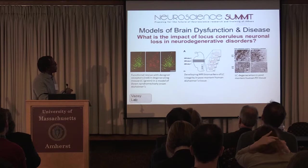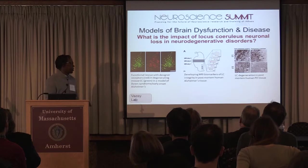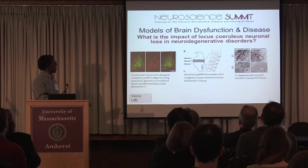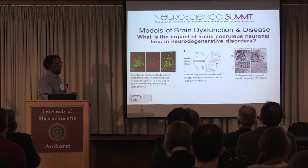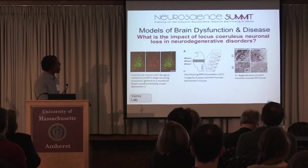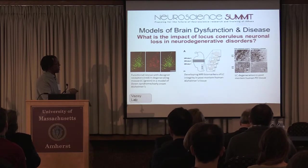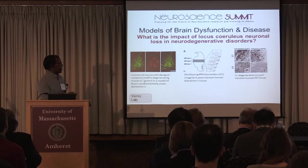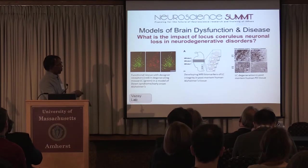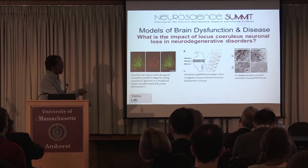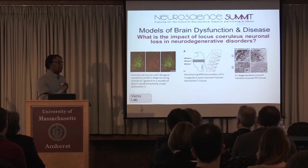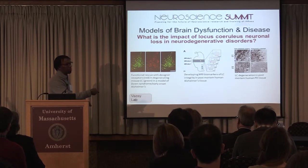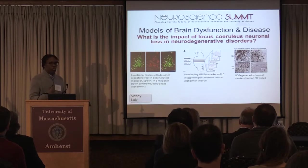In Elena Vesey's lab, she's been asking what is the impact of locus ceruleus neuronal loss in neurodegenerative disorders. She's been focusing on noradrenergic cells, using rodent models to look at how loss of those cells affects downstream circuit function and subsequent behavior. Loss of these noradrenergic cells in the locus ceruleus happens early in Alzheimer's disease and Parkinson's disease. She's been working with post-mortem human tissue to develop new biomarkers for locus ceruleus integrity in both diseases, with the goal of developing new therapies.